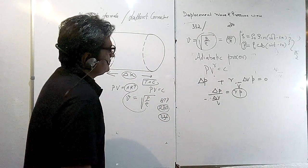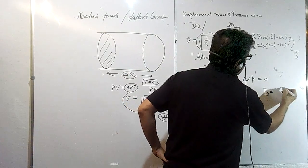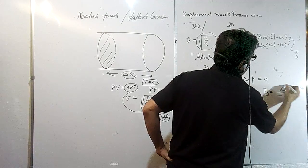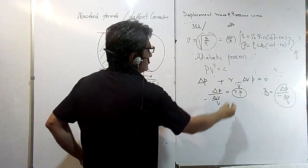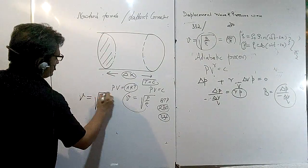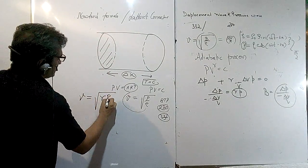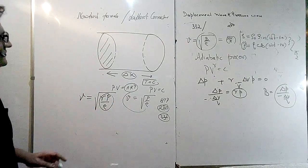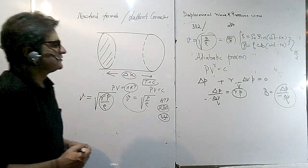And we know that the bulk modulus is ΔP upon minus ΔV upon V, so bulk modulus is to be replaced by γP and not by P. So with the Laplace correction, the velocity of sound wave comes as γP upon rho. So this is the Laplace correction; this is Newton's formula.